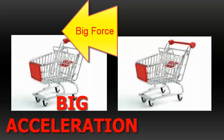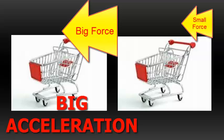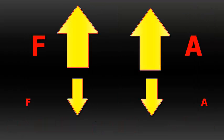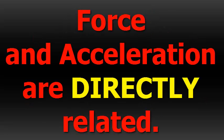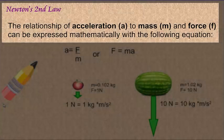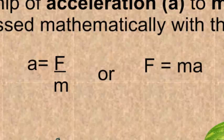Suppose you gave this grocery cart a hard push. This thing's going to go flying and probably hit a car in the parking lot. Let's say we took that same exact grocery cart, but this time we just lightly tapped it — we gave it a little force. Then we're going to see a little acceleration come out of it, and this cart would not hit another car in the parking lot. What we're seeing is that big forces provide big acceleration, and small forces provide small acceleration. Force and acceleration are directly related. If one goes up, the other one has to go up. The relationship of acceleration to mass and force can be expressed mathematically: A equals F over M, or rearranged to solve for F: F equals MA.